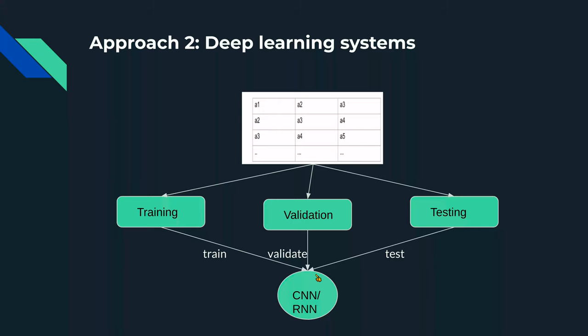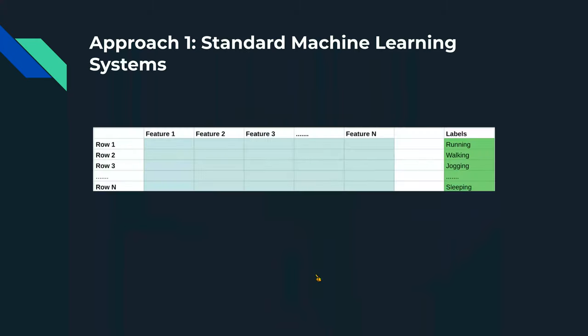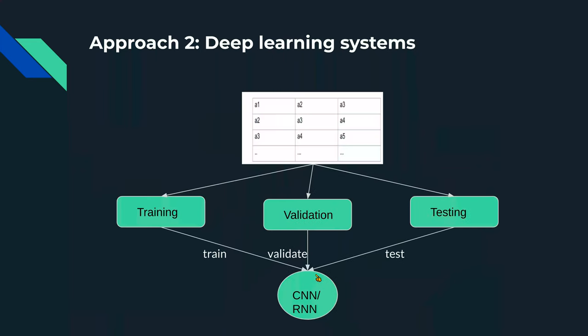The second approach is to skip the manual feature extraction step and simply feed the raw data directly into a deep learning algorithm — usually a convolutional neural network (CNN) or recurrent neural network (RNN). The mechanisms inside these neural networks allow them to ingest this raw data and transform it into something useful for the final prediction. Similarly, we can split the data into three parts for modeling, testing, and fairness purposes.